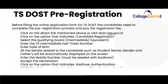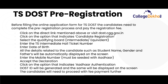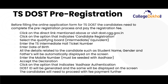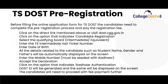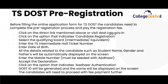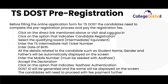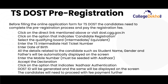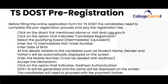Click on the option that indicates candidate registration. Select the qualifying board, that is intermediate or equivalent. Enter the TS Intermediate Hall Ticket Number and your date of birth. All details related to the candidate such as name, gender, and father's name will be automatically displayed on the screen. Enter the mobile number which must be linked to your Aadhaar card. Accept the declaration and click on the option that indicates Aadhaar authentication. The DOST ID will be generated and displayed on the screen, after which candidates will need to proceed with fee payment.